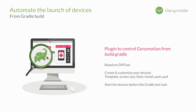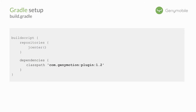We developed the Gradle plugin based on GMTool so you can easily control your GeniMotion device from your build. The idea is to make the build system launch the virtual devices that you configured before you run your instrumented tests. How can you add the Gradle plugin to your project? On the build script block, you will have the same repositories and dependencies. For the Gradle plugin, the repository is jcenter.